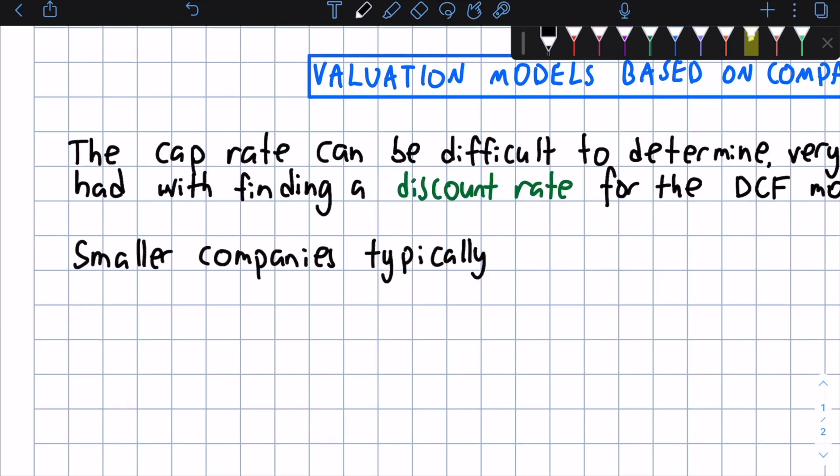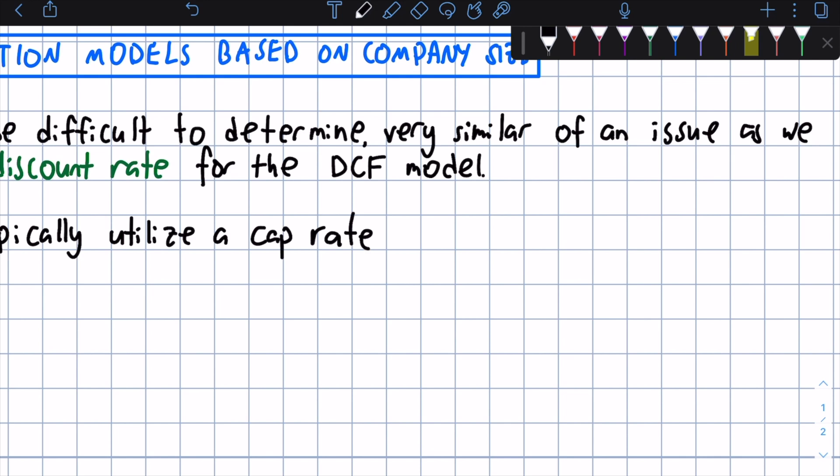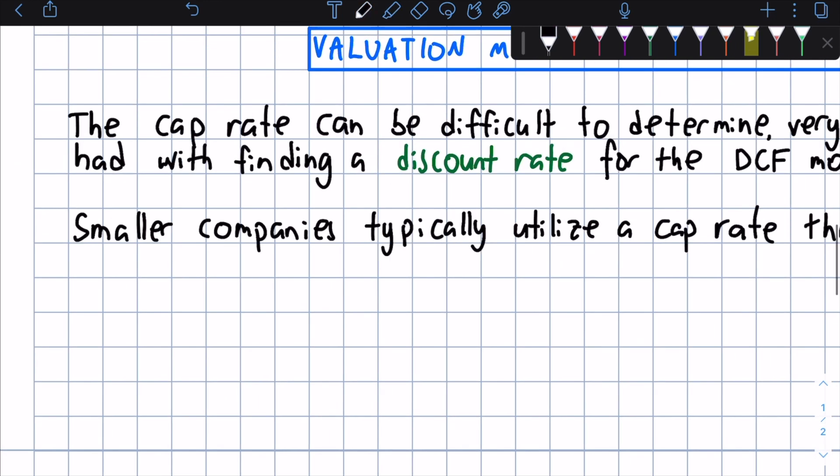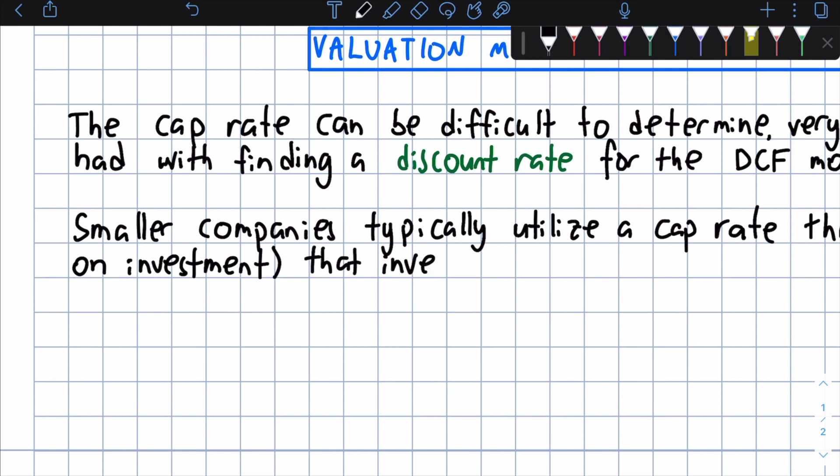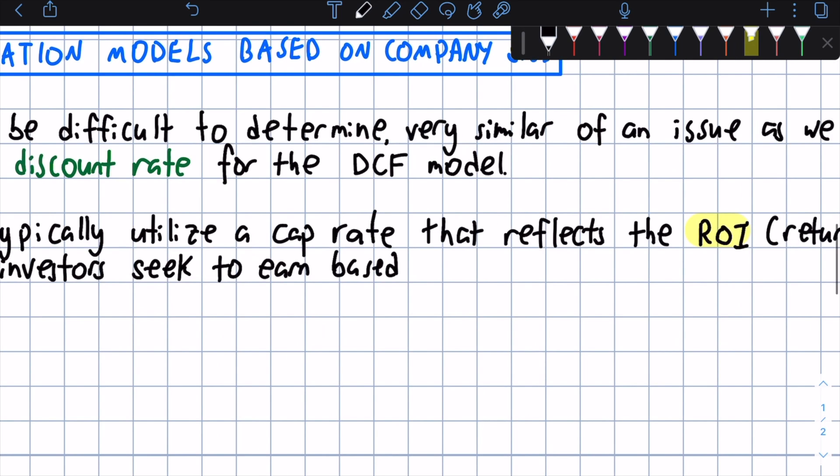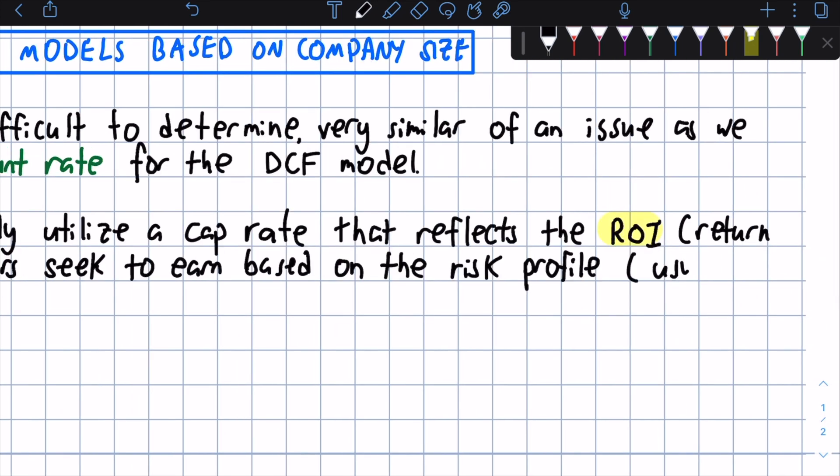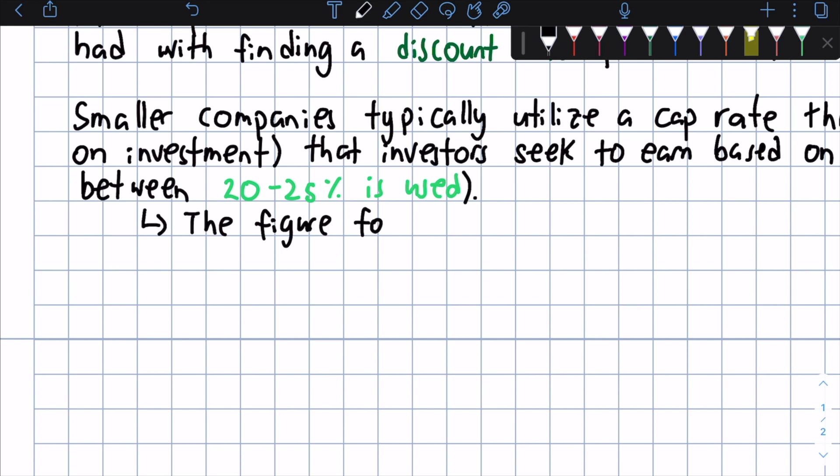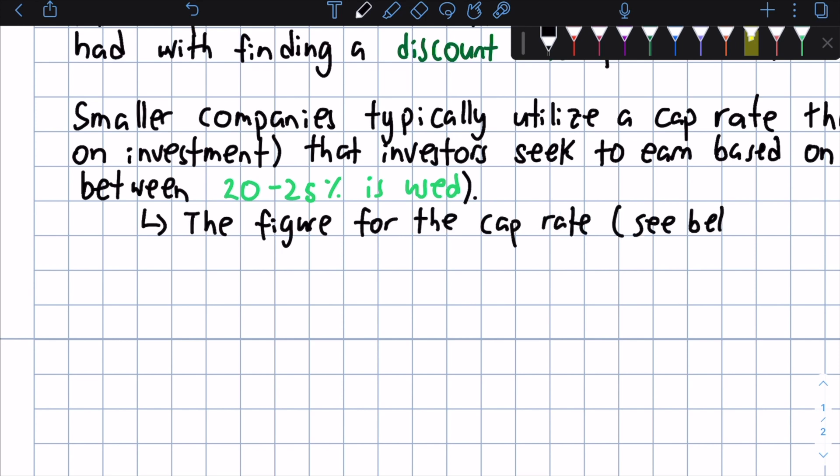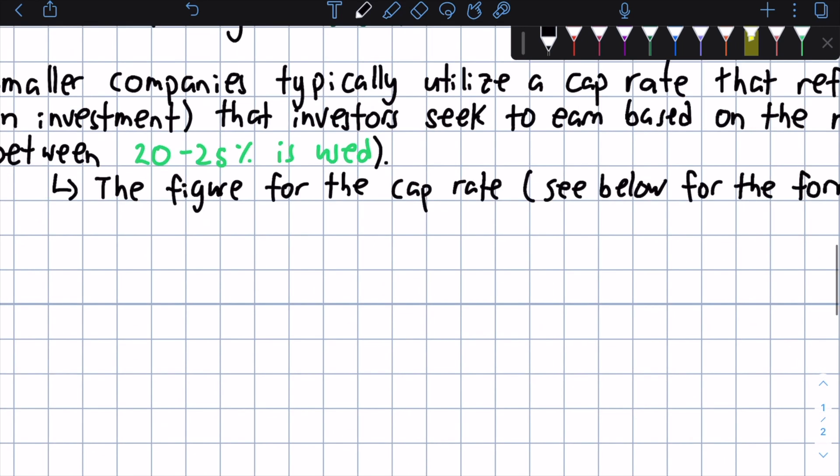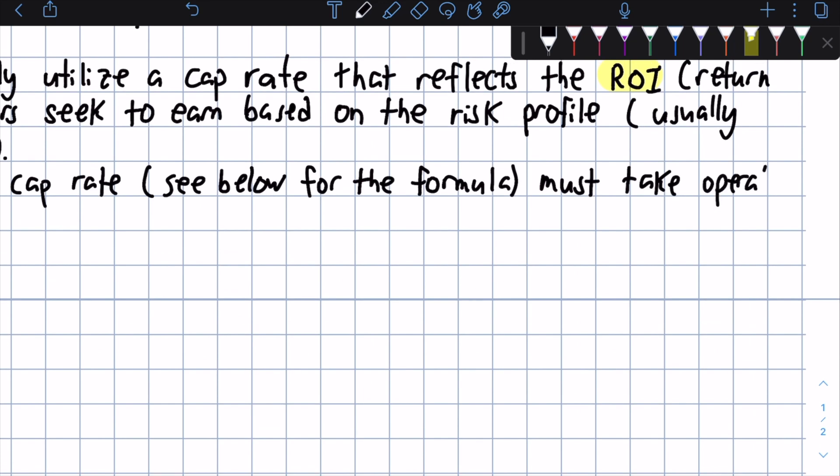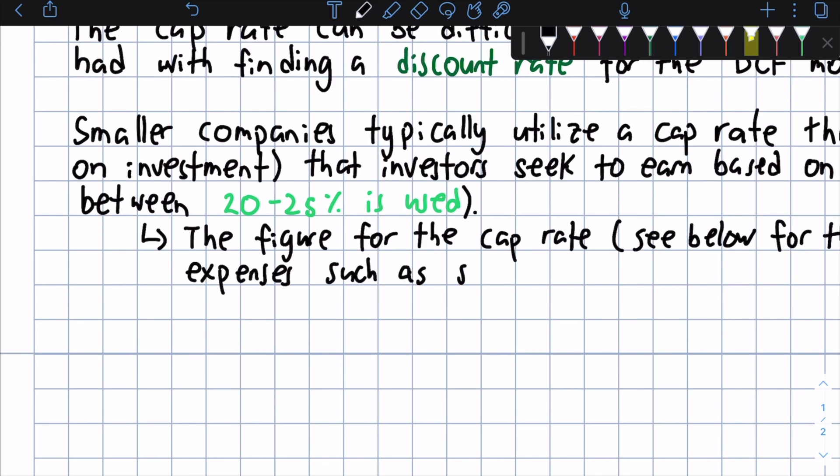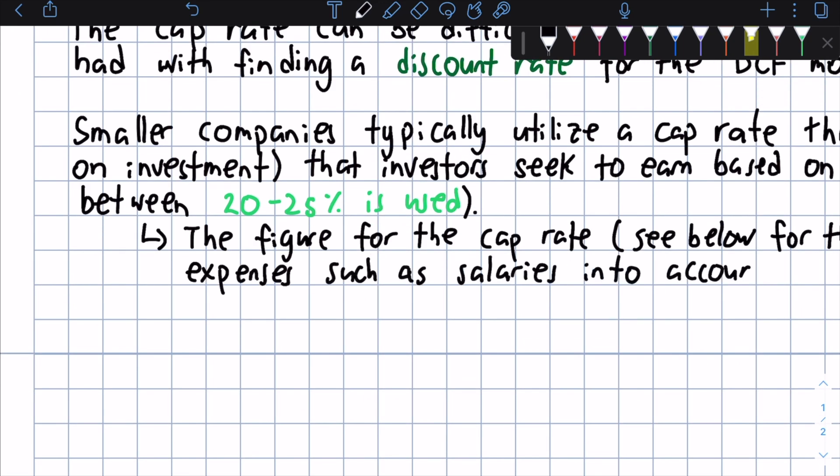Smaller companies typically utilize a cap rate that's industry standard, that reflects the ROI, or return on investment, that investors seek to earn based on the risk profile of that company. And typically this is between 20 to 25%. The figure for the cap rate, which we will see below in a formula, must take operating expenses, such as salaries as well, into account to find this cap rate. And this is typically for larger companies.